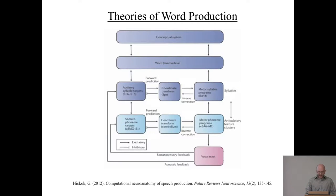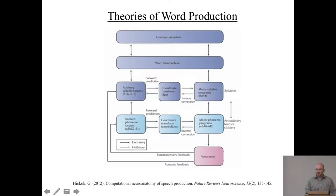Here's another description from Gregory Hickok's Computational Neuroanatomy of Speech Production. This focuses on slightly different aspects. The conceptual system is considered an abstract system — we know about objects in the world. We have a word-level system, and there's a mapping between our concepts and our words. The details of this model focus on the phonological level in the brain and vocal tract. We have auditory, motor, and somatosensory representations acting in loops to control the physical vocal tract, representing what we think of as phonemes and syllables in the form of a word.